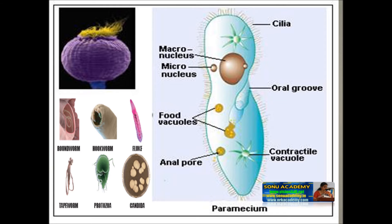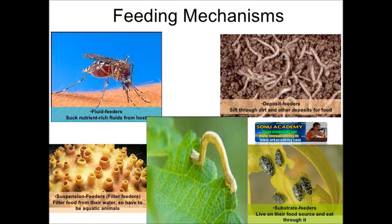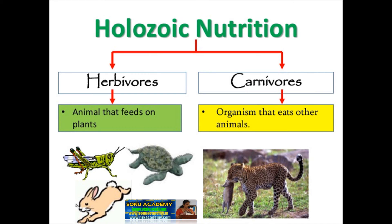As the food is already in a digested state, some of these animals may not have a digestive system, or may have a very simple one. The majority of animals take solid or liquid food and have a special mechanism for feeding, digesting the food with the help of digestive enzymes — this is known as holozoic nutrition.